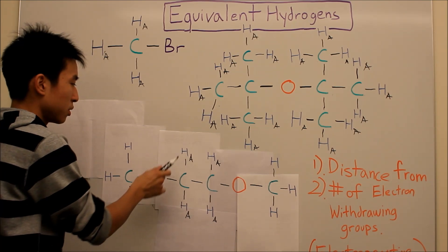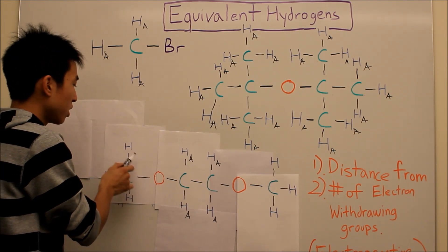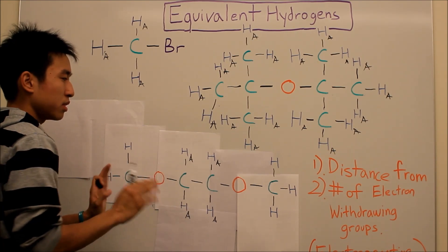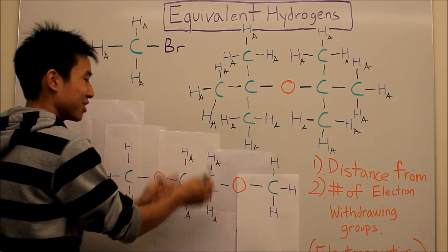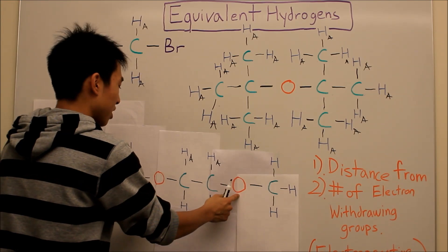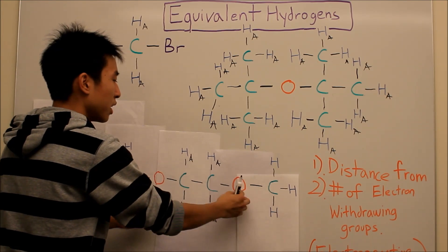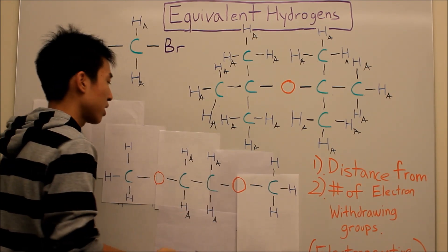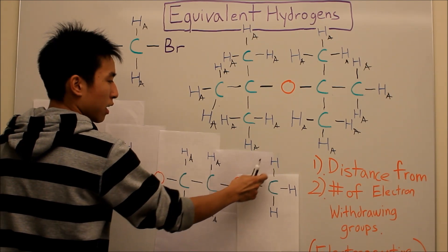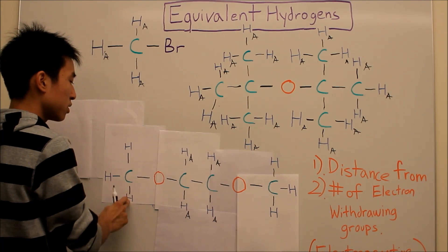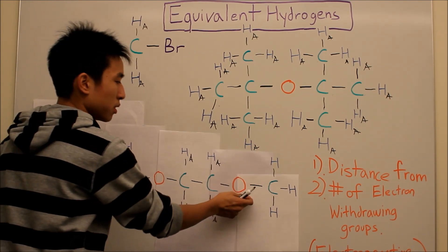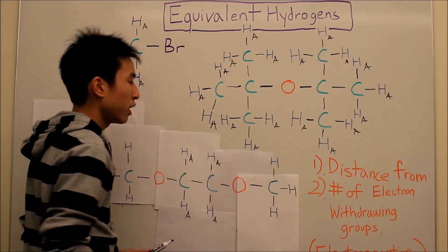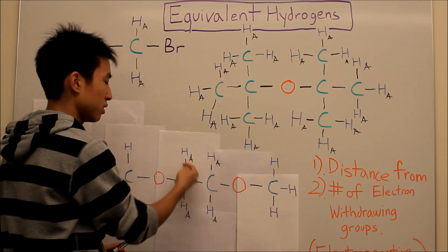You might think that since both groups are one bond, two bonds away from the oxygen it should be the same. But these middle hydrogens are experiencing a sandwiching effect — they're being sandwiched by the two oxygens, which are electronegative. So the oxygens draw electrons away from those hydrogens, giving them a double effect. The outer hydrogens — these three and these three — only feel the effect of one oxygen, so the pull isn't as strong and they're not as deshielded as the middle ones.